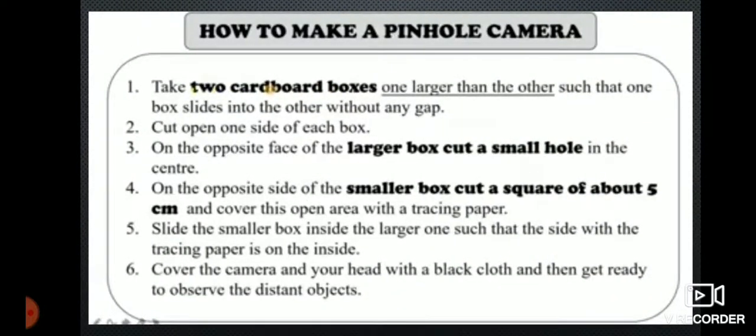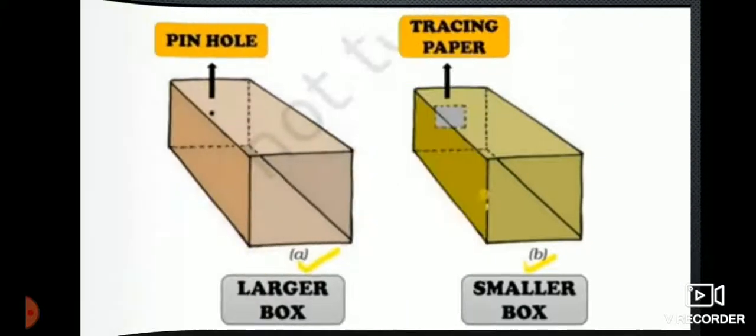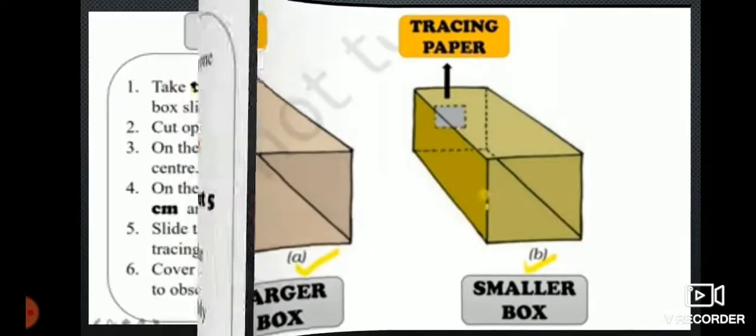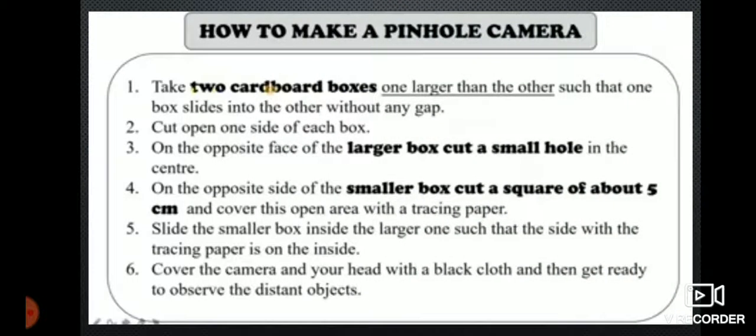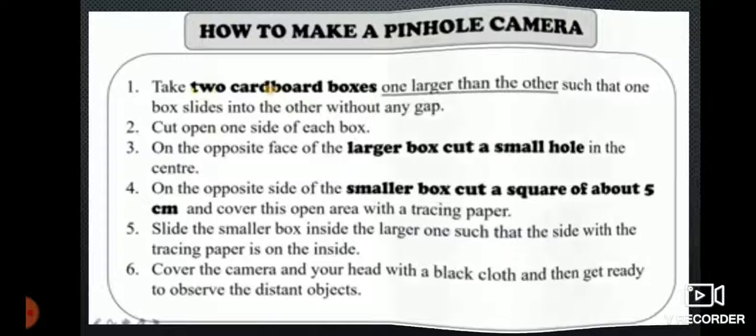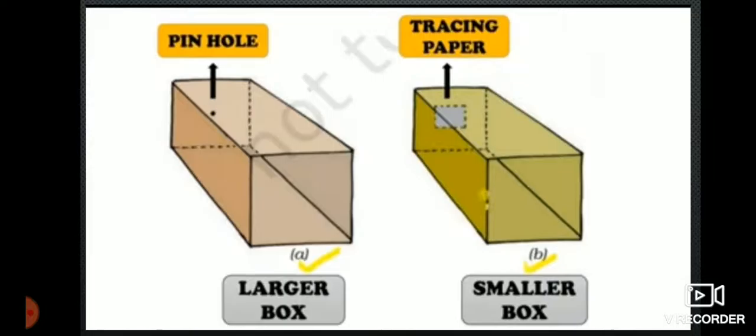How to make a pinhole camera? Take two cardboard boxes, one larger than the other such that one box slides into the other without any gap. Cut open one side of each box. On the opposite face of the larger box, cut a small hole in the center.